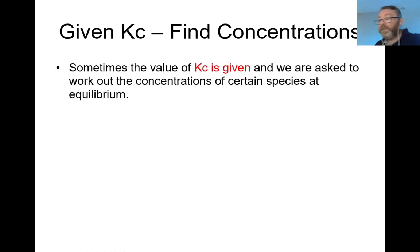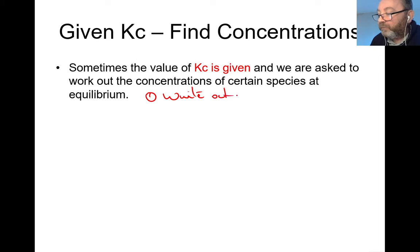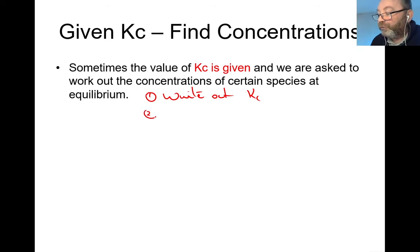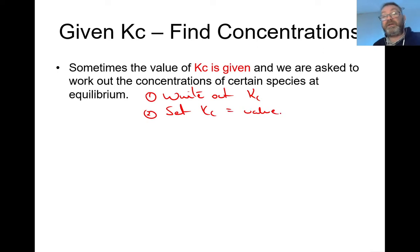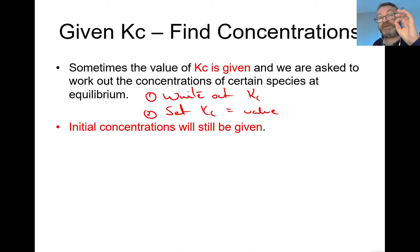If the value of Kc is given and we're asked to work out the concentrations of certain species at equilibrium, think of two things. Number one: write out the Kc expression automatically — every time Kc is mentioned, write it down. Number two: set Kc equal to the value they give you. Write the expression and set it equal to the Kc value. The initial concentrations will still be given, so they have to start you with something — they'll tell you the starting concentrations.